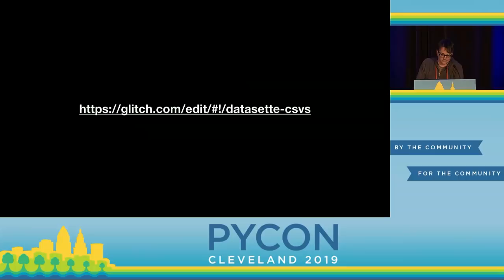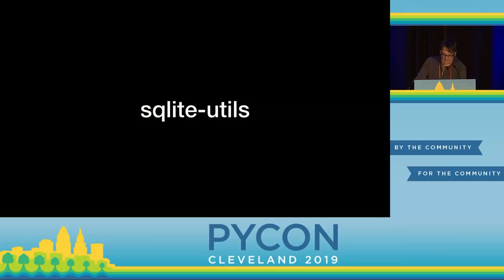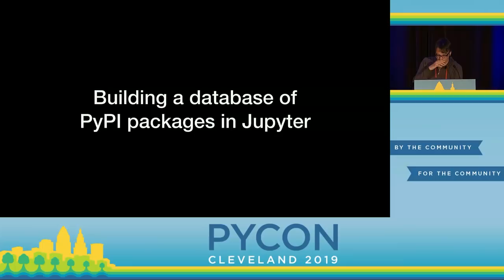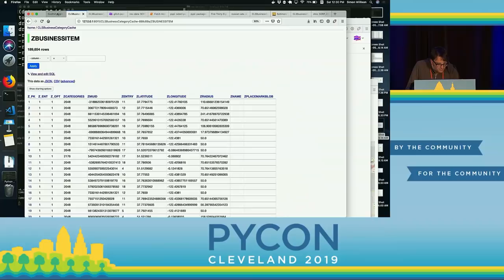Let's talk about a slightly more sophisticated example. CSVs to SQLite works great if your data is a CSV file, but a lot of times you want to pull data from multiple sources and do something more comprehensive before you start serving it up. I've been working on a library called SQLite Utils, mainly designed for running in Jupyter Notebooks — I'm a huge fan of Jupyter Notebooks. I'm going to talk you through how I built a database of the most popular PyPI packages using that Jupyter Notebook and this library.